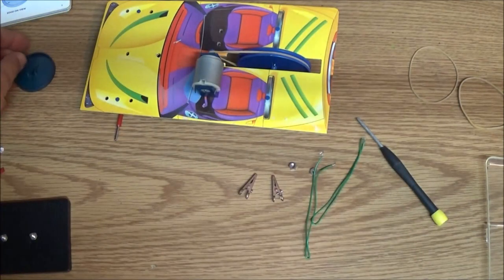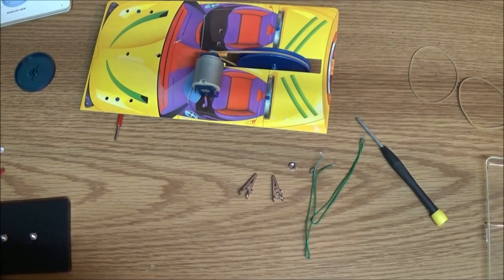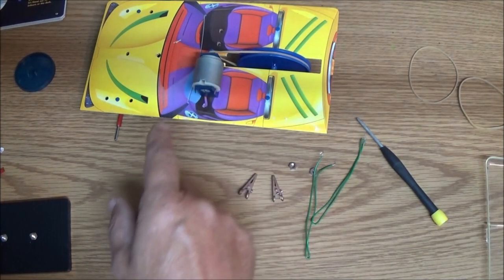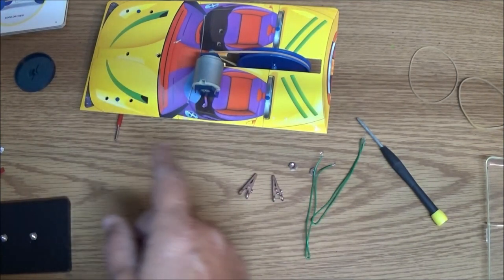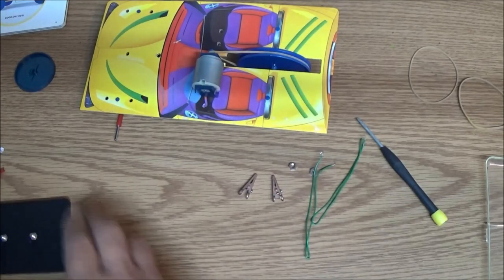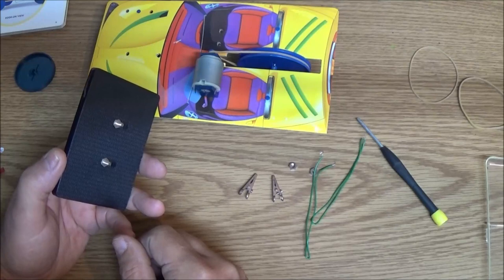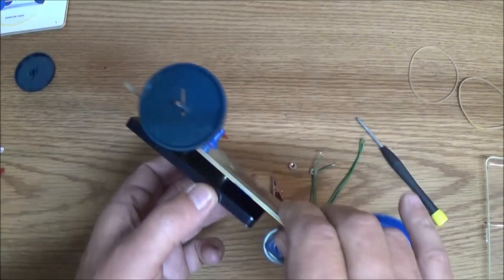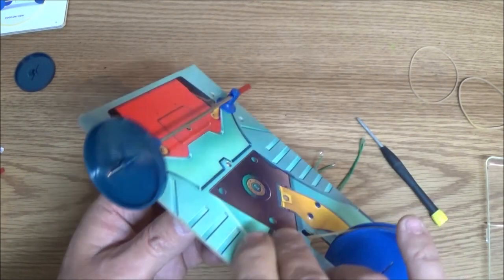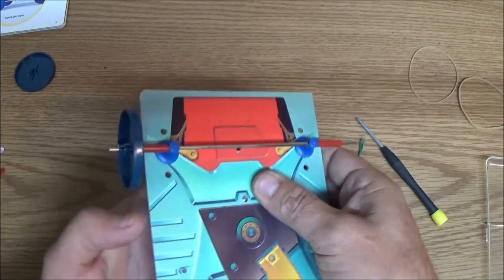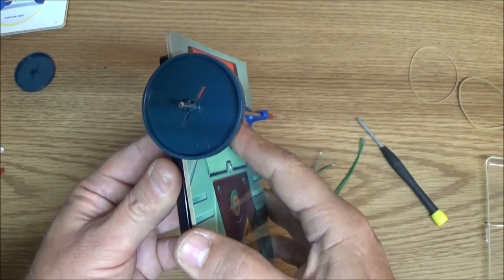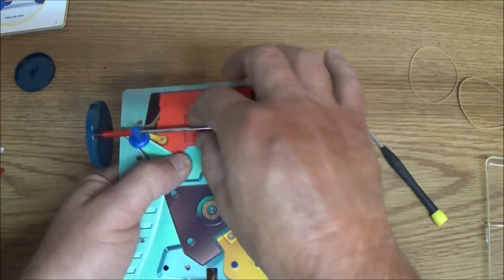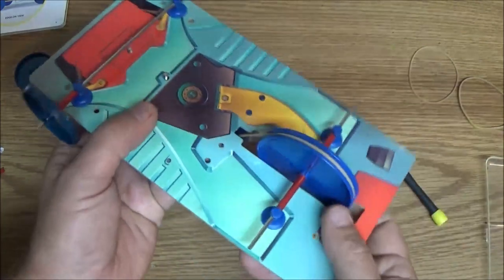I'm going to get some glue and we'll glue that, but first let's keep going. The next step is to hook up our solar panel, which is going to go on the top of the car like this, just like that.